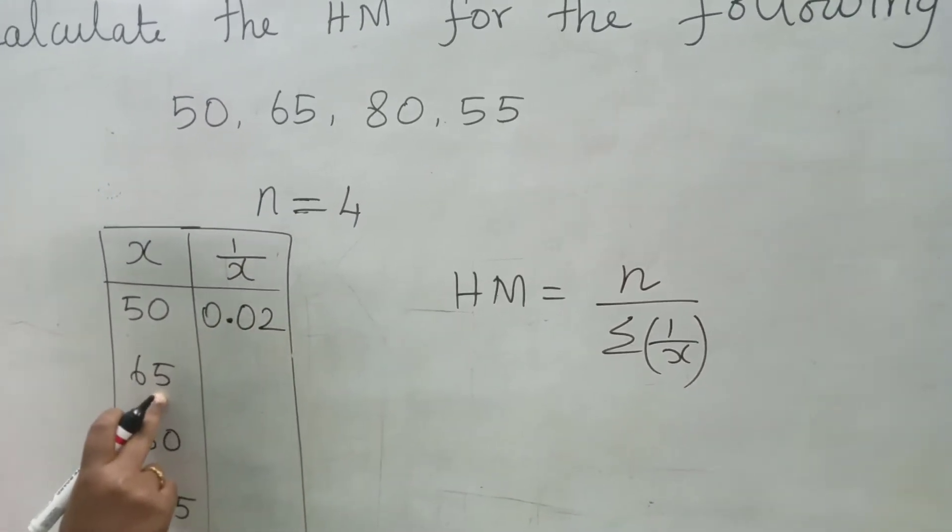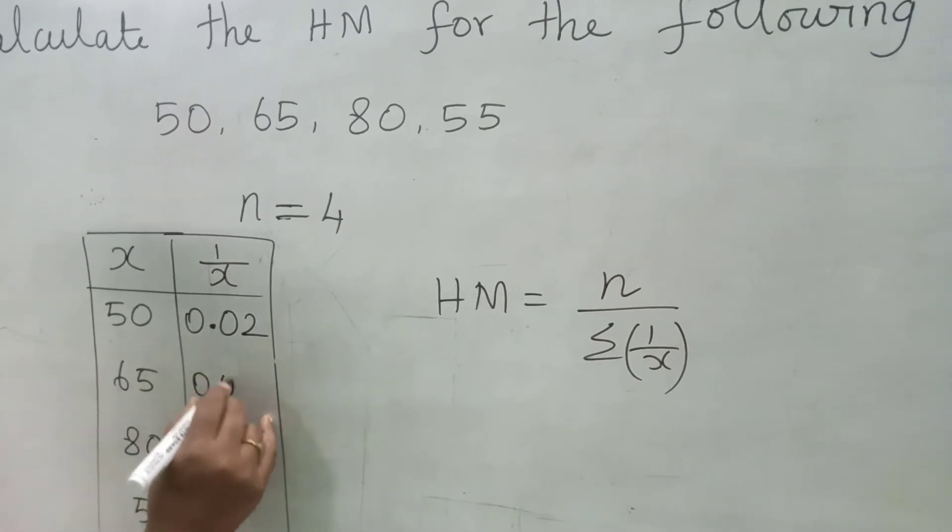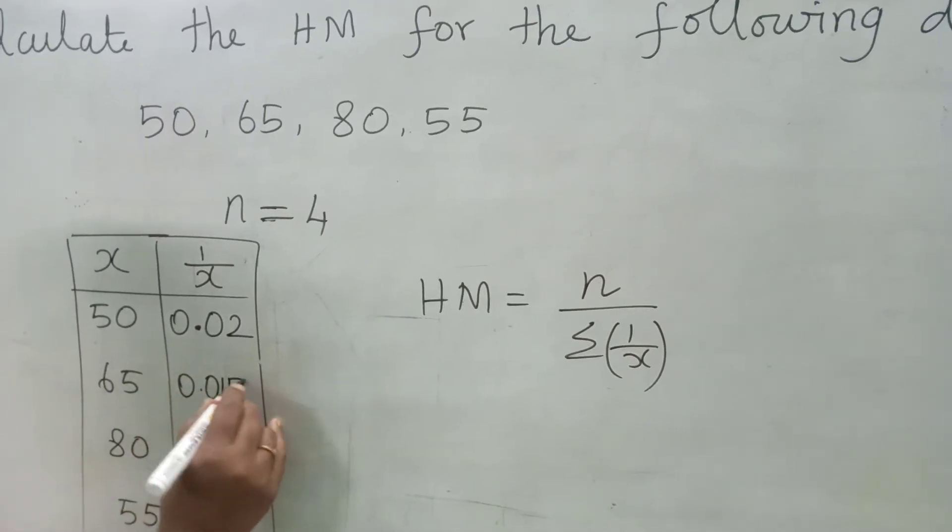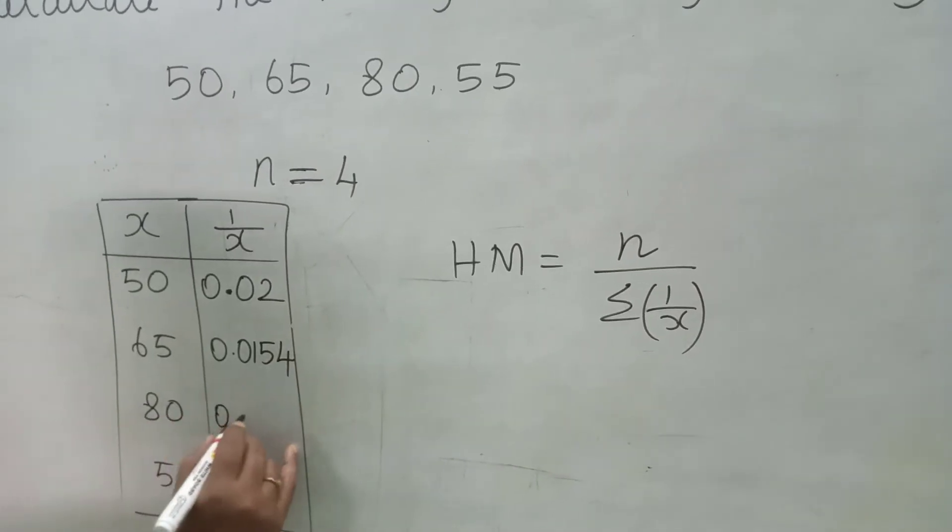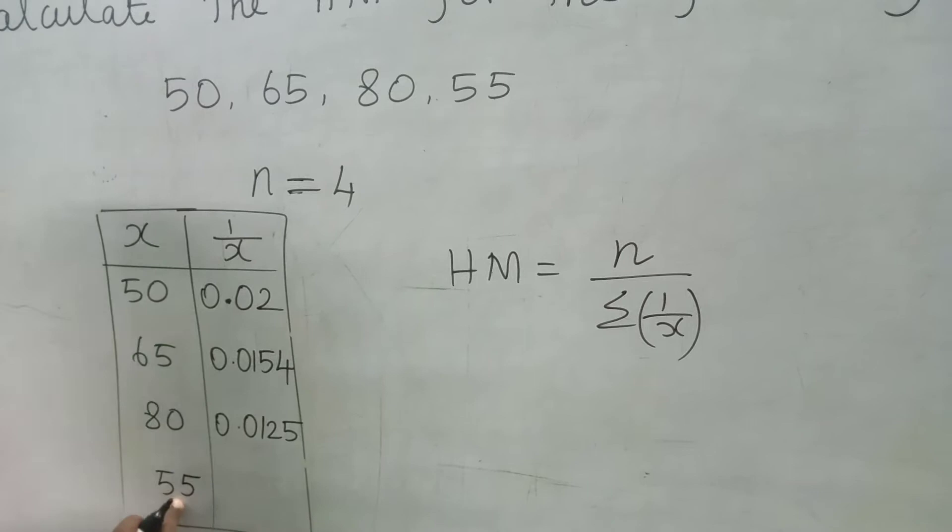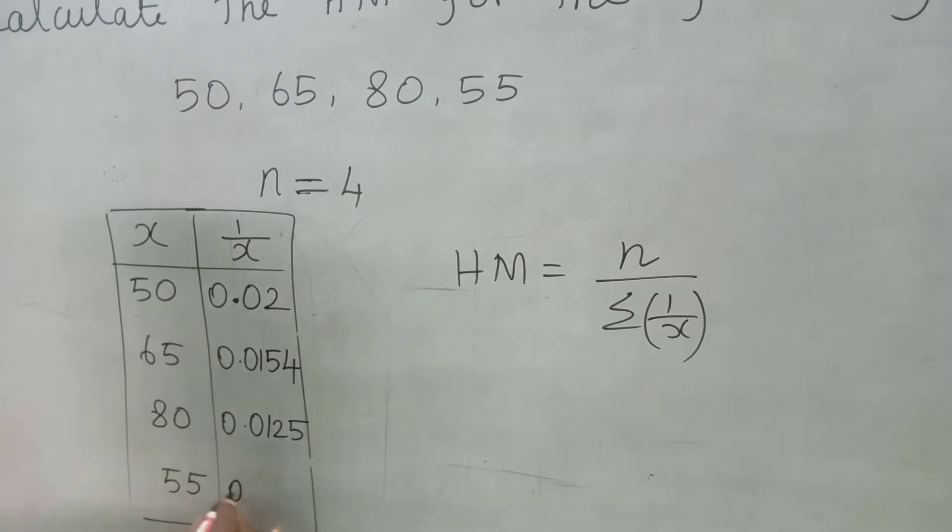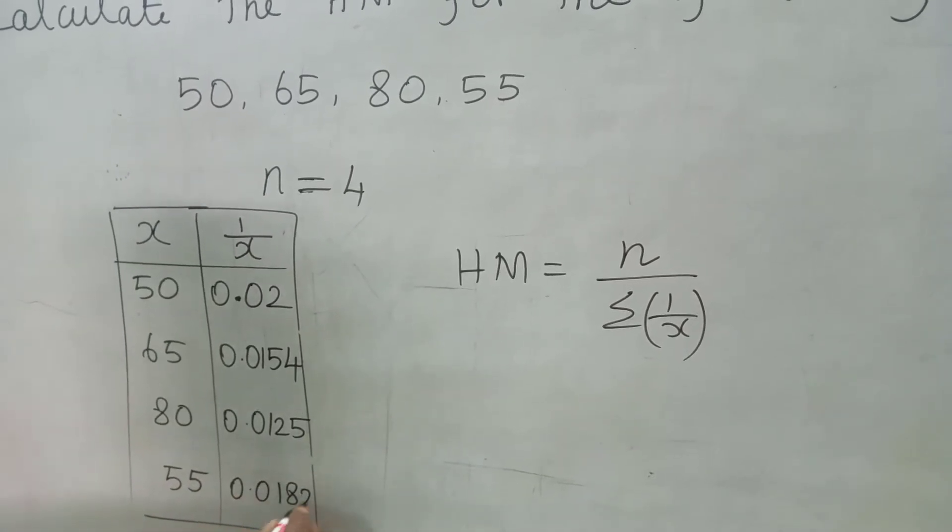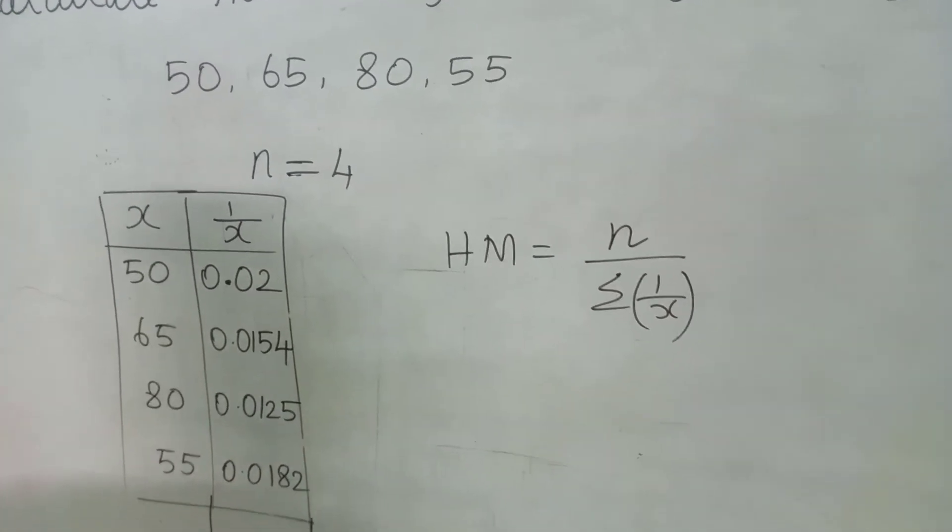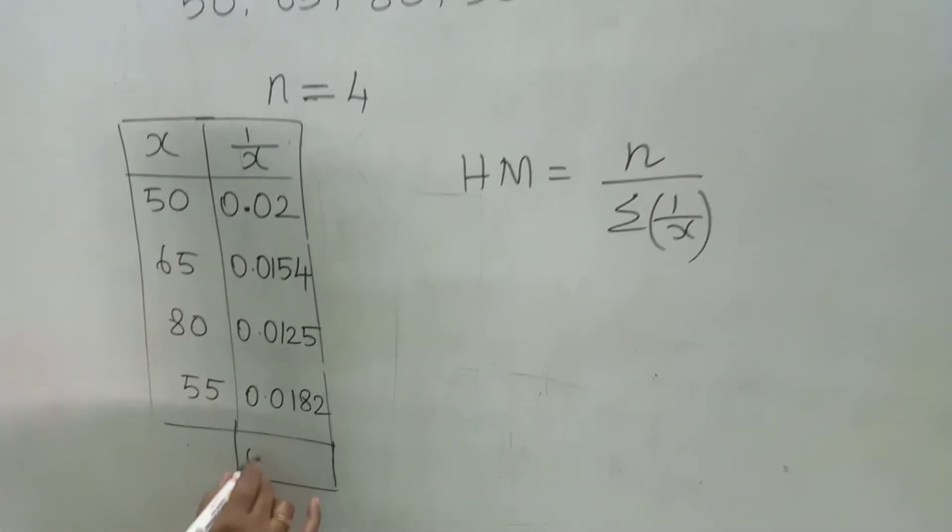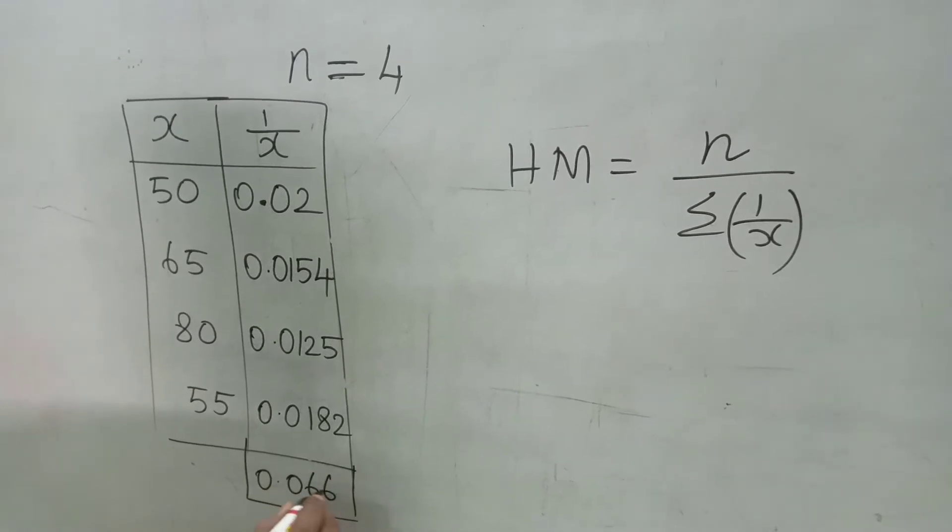Then 1 divided by 65. That is 0.0154. 1 divided by 80 is 0.0125. 1 divided by 55. That is 0.0182. Adding all the data gives sigma 1 by X which is equal to 0.0661.